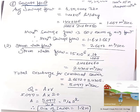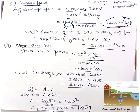Now we find sewage flow and stormwater flow. Average sewage flow: population = 4,50,000, sewage flow given in liters per capita per day. Converting to m³/s by dividing by 10³ and 24 × 60 × 60 gives 1.667 m³/s. This is the sanitary sewage coming from houses. Maximum sewage flow = 60% in excess of average flow, so we multiply 1.667 m³/s by 1.6.